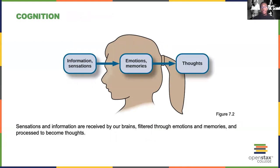Here's a simple diagram explaining the basic pathway of cognition. As we learned in sensation and perception, we receive sensory information through our eyes, ears, nose, or through other sensory modalities. That sensory information gets filtered through our emotions, our memories, and our experiences. After that filtration, we experience thoughts. Similar to top-down processing, much of our thinking is influenced by prior experiences, memories, or even emotions.